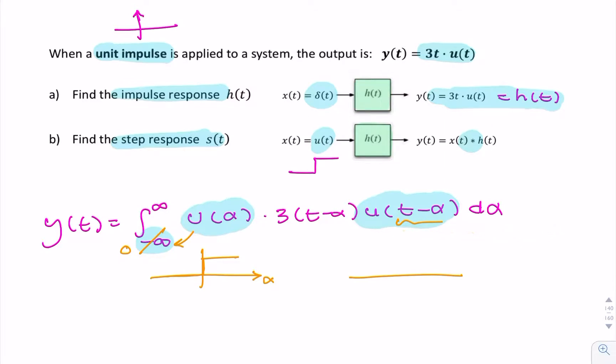So it's a reverse step. So if this is zero and that's alpha, it's a reverse step at alpha equals t. So provided that t is greater than zero, this is the equivalent of integrating all the way until t. Because for values of alpha greater than t, what you have is zero.